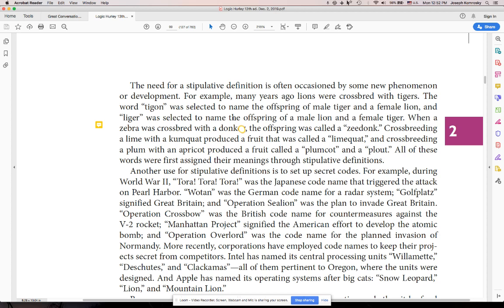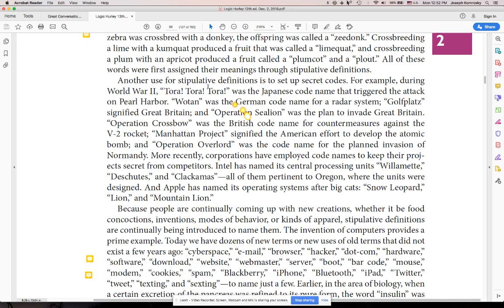Students in one of my classes, I broke them up into groups and I had them think of some good stipulative definitions. One group came up with tindo, which is a tinted window. I thought that was funny. There's a bunch you can think of. The point is you're combining two words. They give you a bunch of examples down here.